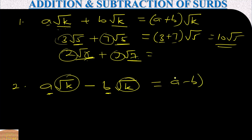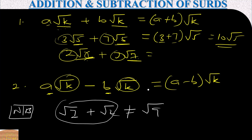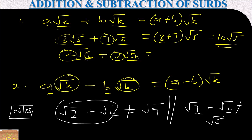Important note: √7 plus √2 is NOT equal to √9. Don't think this is just seven plus two — the expression remains as it is. Similarly, √7 minus √2 is NOT equal to √5. That expression also remains the same.